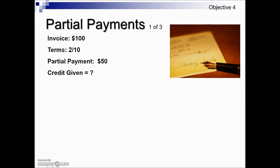Let's look at an example. We have an invoice of $100 with terms of 2/10, and a partial payment of $50 is made. The customer is paying $50 out of pocket, but what credit is given on the accounting side for the business that this payment is being made to?